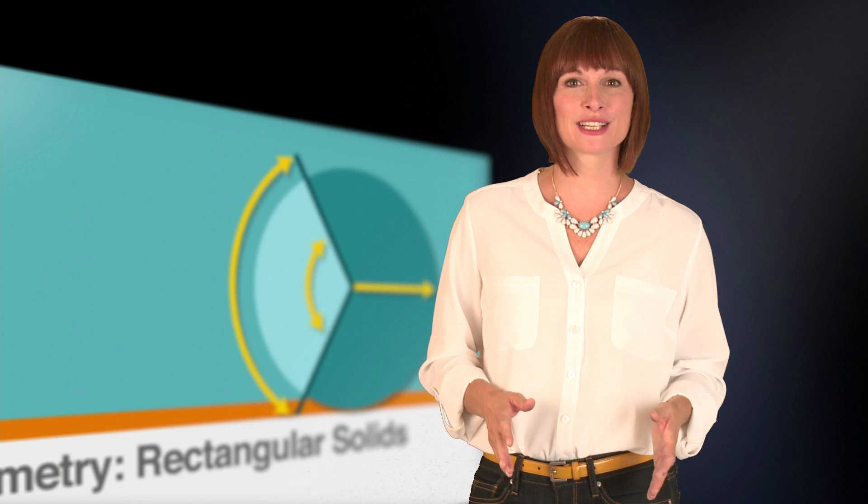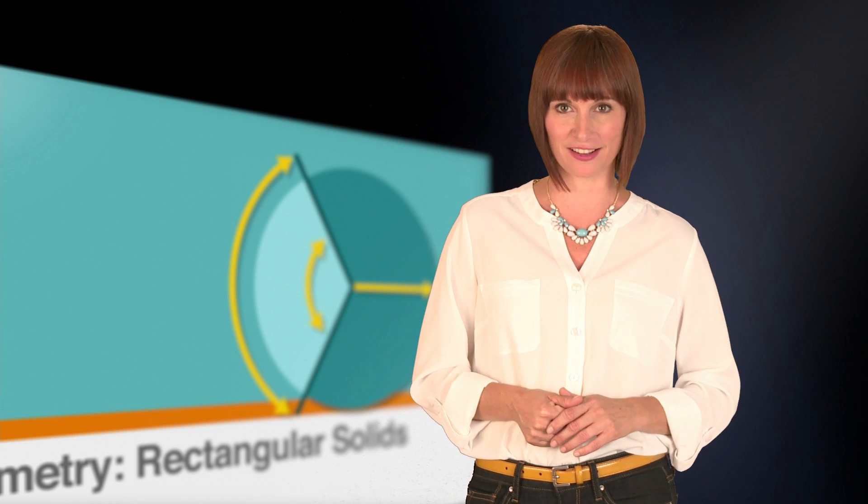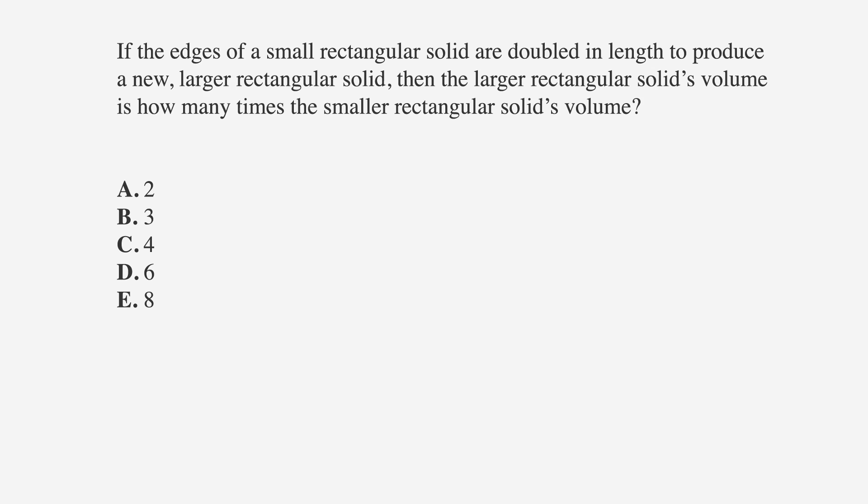Now we're ready to look at an ACT question that asks us to compare the volume of two rectangular solids. If the edges of a small rectangular solid are doubled in length to produce a new, larger rectangular solid, then the larger rectangular solid's volume is how many times the smaller rectangular solid's volume?